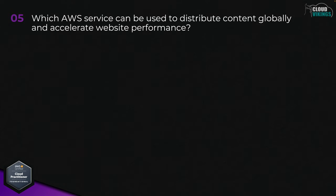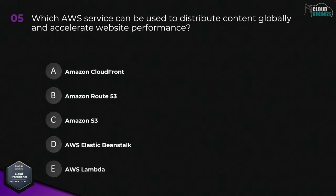Question five: which AWS service can be used to distribute content globally and accelerate website performance? Options are: A, Amazon CloudFront; B, Amazon Route 53; C, Amazon S3; D, AWS Elastic Beanstalk; or E, AWS Lambda. The correct answer would be A, Amazon CloudFront.